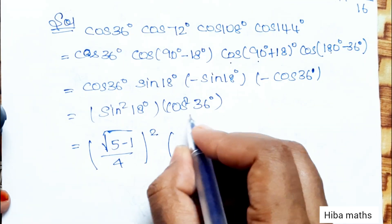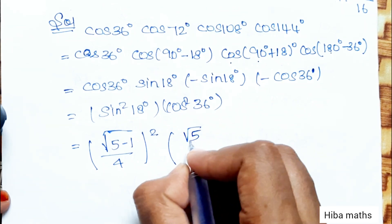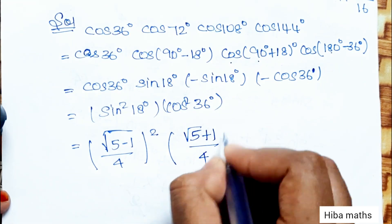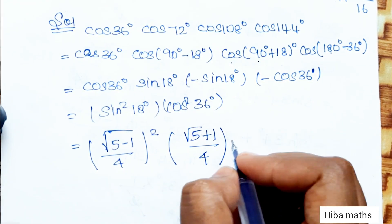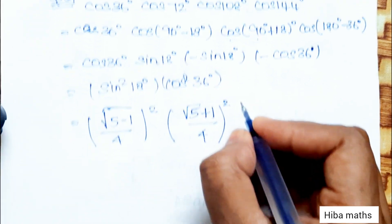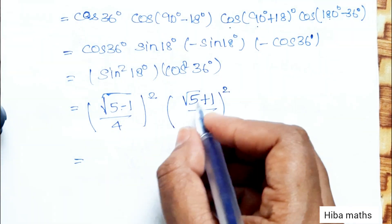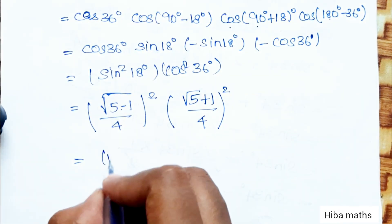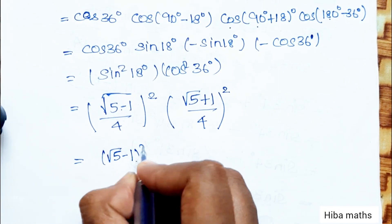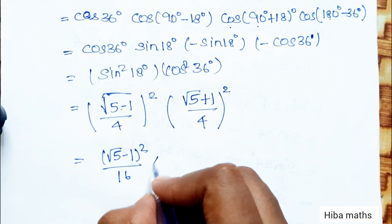Substituting the known values: sin 18° = (√5 - 1)/4 and cos 36° = (√5 + 1)/4. Squaring each: sin²18° = (√5 - 1)² / 16 and cos²36° = (√5 + 1)² / 16. So the product becomes (√5 - 1)² · (√5 + 1)² divided by 16 × 16.